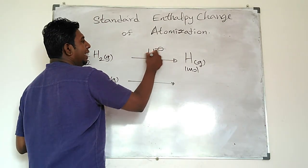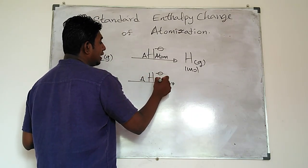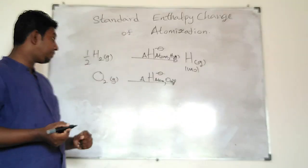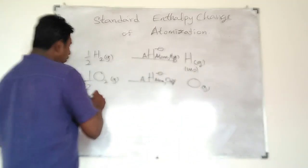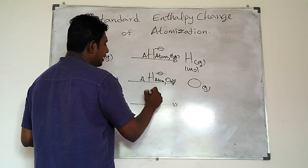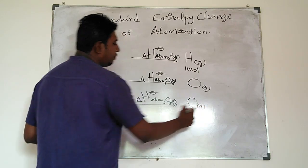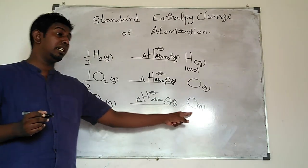Let's use another example — O2 gas, di-oxygen. The standard enthalpy change of atomization of O2 gas involves the formation of one mole of gaseous oxygen atoms. You could use not only O2 but also O3 gas. The standard enthalpy change of atomization of O3 gas is still the formation of one mole of gaseous oxygen atoms using that given species. In the balanced chemical equation you make one mole of atoms, so O3 has a coefficient of one third.